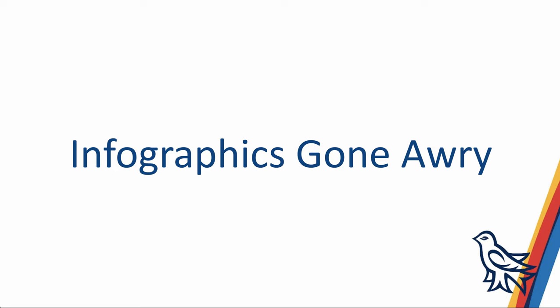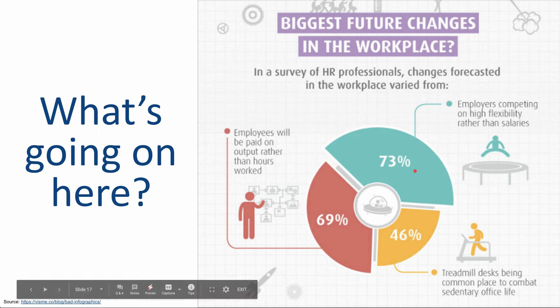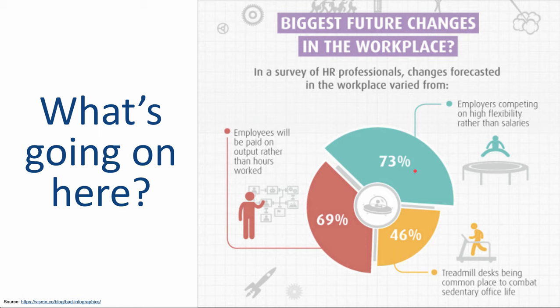Here are some examples of infographics that maybe don't work the way they were intended to, or could be improved. This first one looks visually pleasing generally, but if you notice, the numbers don't add up to 100%. Typically, if you're going to use a pie chart, you want the numbers to add up to 100%. In this case, they probably conducted a survey where respondents could select multiple options, so you can get more than 100% when you add up the responses. Traditionally, you'd want to use a bar chart or something similar rather than a pie chart for data like this.